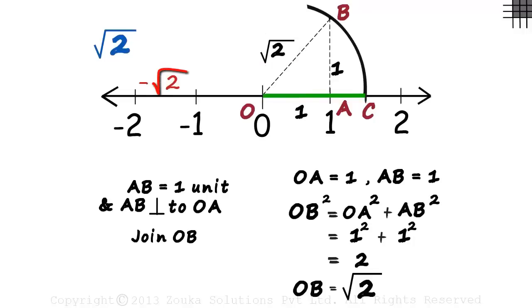And if we need minus root 2, then we cut the same arc on the other side of O.